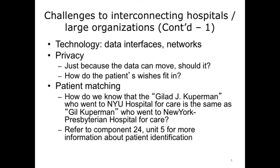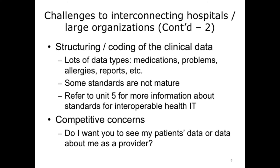Another challenge is patient matching. In the United States, we do not have a universal patient identifier. If I go to one facility and identify myself as 'Gil Cooperman,' and I go to another facility and identify myself by my full name as 'Gilad J. Cooperman,' how would one facility know with certainty that I am the same person that went to the other facility? Another challenge is the structure and the coding of the clinical data. If I want to intermingle data from two institutions — maybe laboratory results — but those data are represented differently in the databases of the two organizations, how would I be able to intermingle those data?